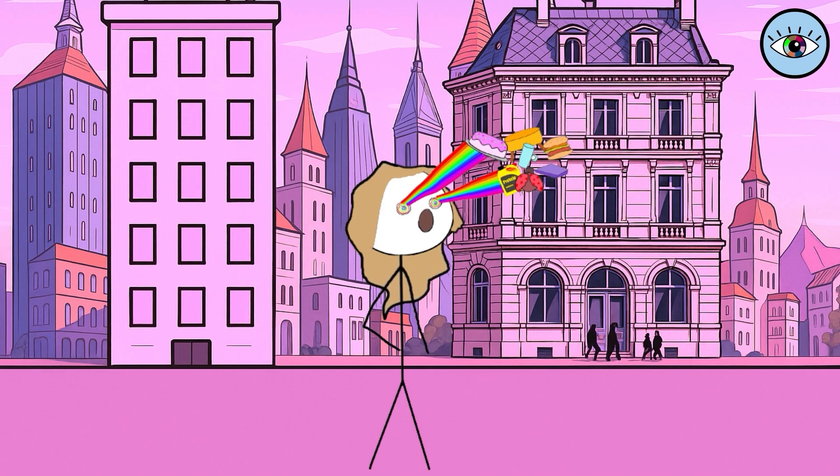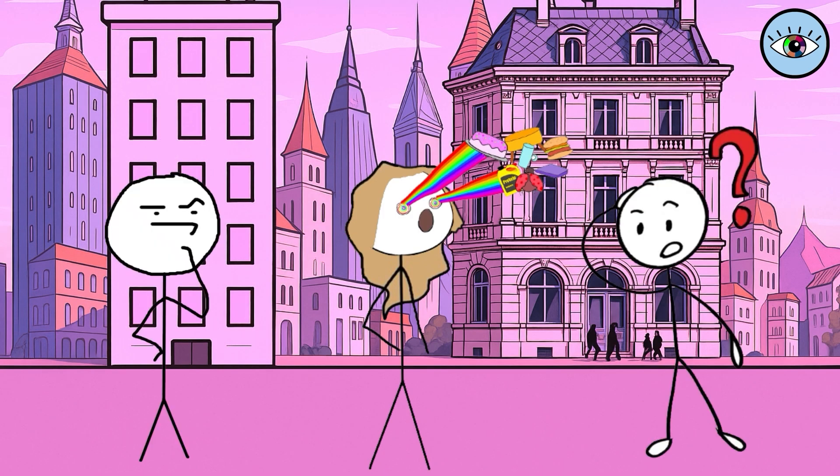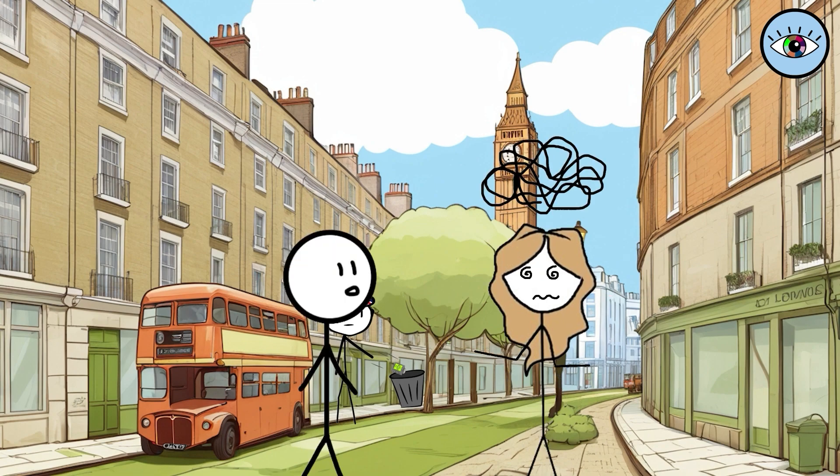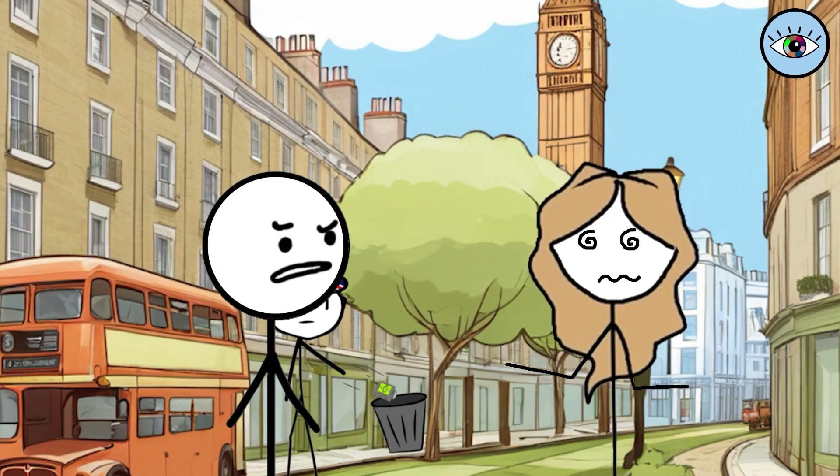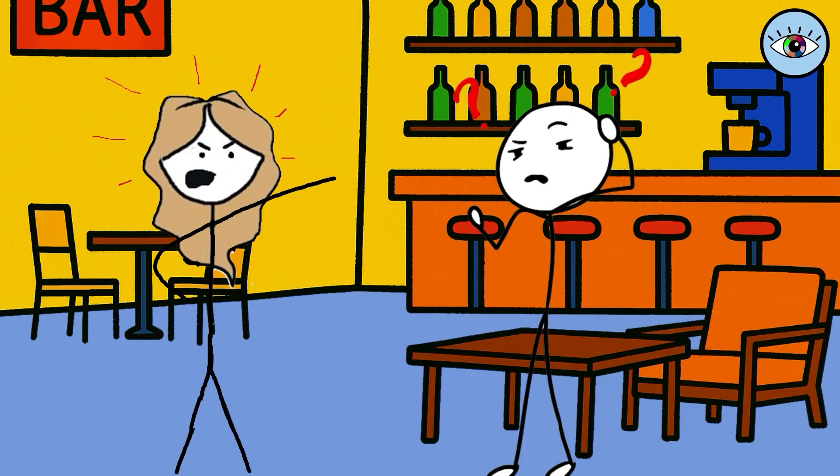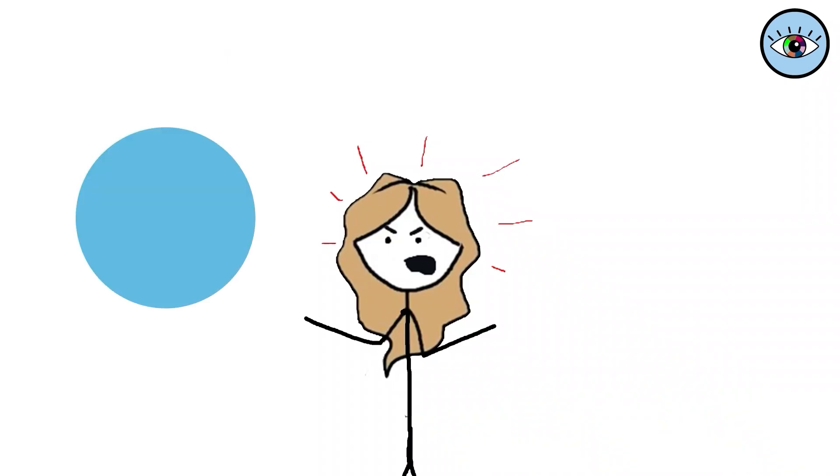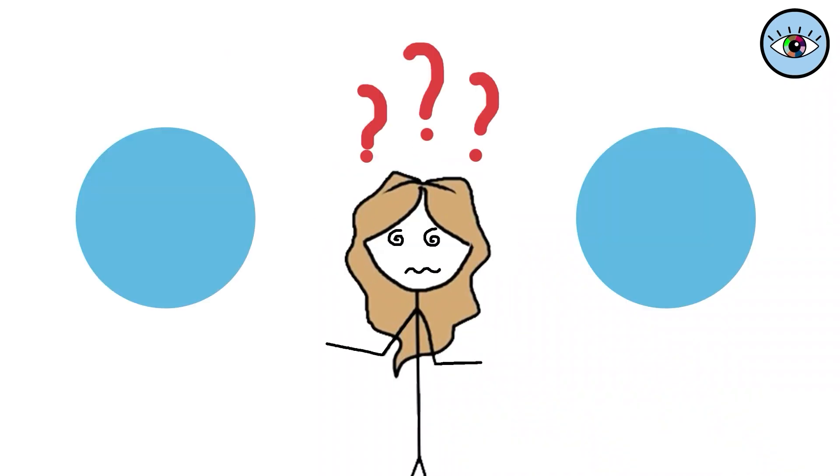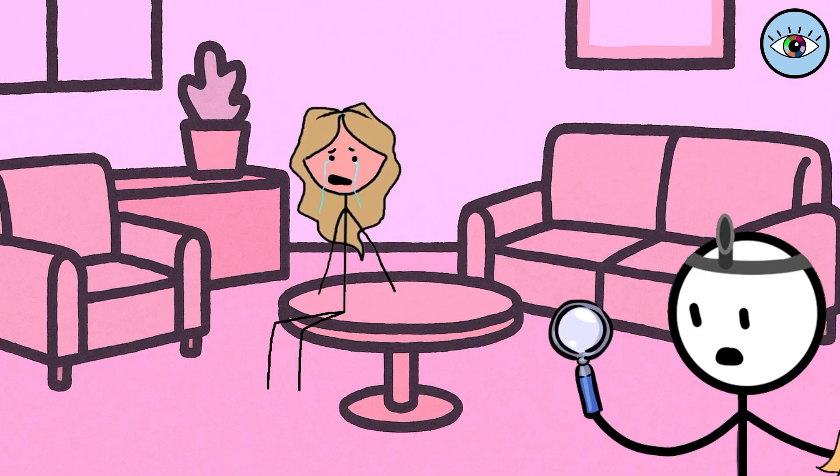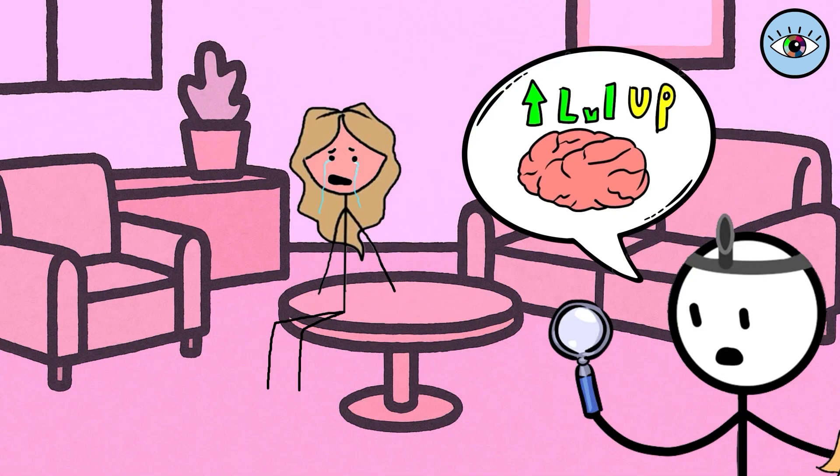The condition is called tetrachromacy and it allows her to see millions of shades that others cannot even imagine. Literally her color vision spectrum is wider but here is where it gets complicated because no one else sees what she sees. She tries to describe a color and people look at her strangely. When she says two shades are different they tell her they are identical. For years she thought something was wrong with her perception when in reality her brain was receiving more information than the rest.